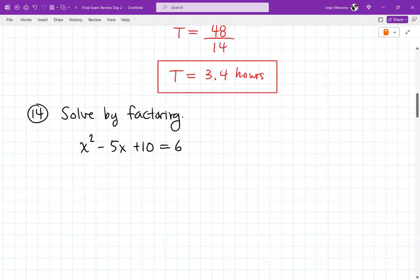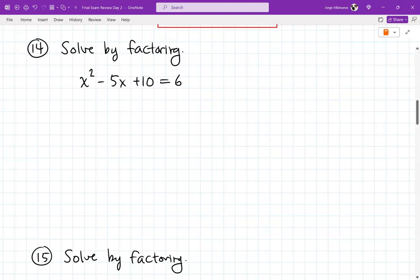All right. So solve by factoring. x² - 5x + 10 equals 6. Notice we're kind of back to what we did yesterday. Yesterday we did a lot of factoring. We only did one solving by factoring. Here's another one. I told you guys yesterday that whenever you solve by factoring, you got to make sure it's set equal to 0. So first thing I got to do is move this 6 over. So this will be x² - 5x + 4 equals 0.